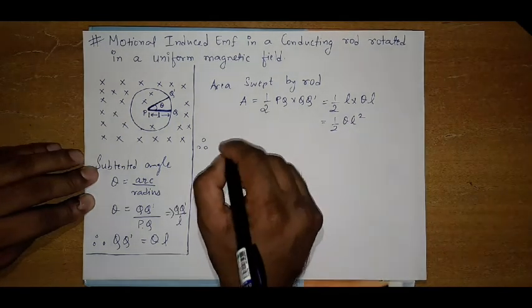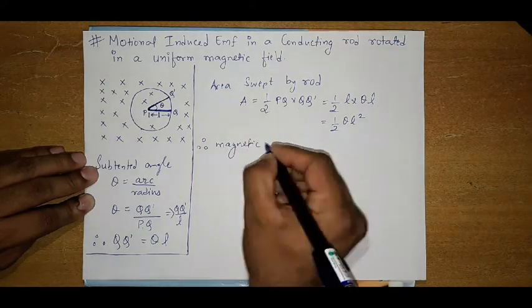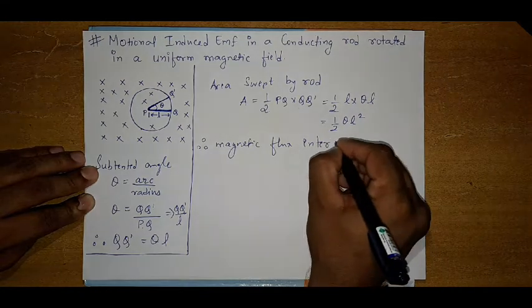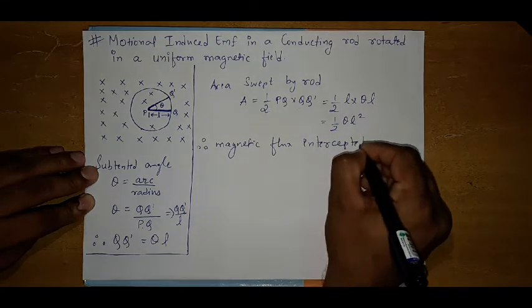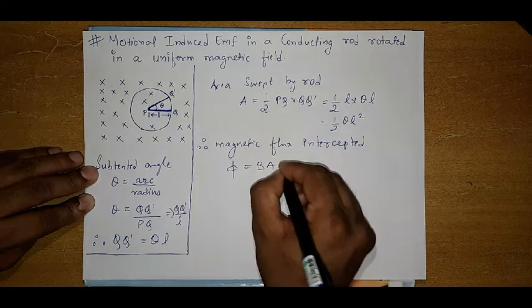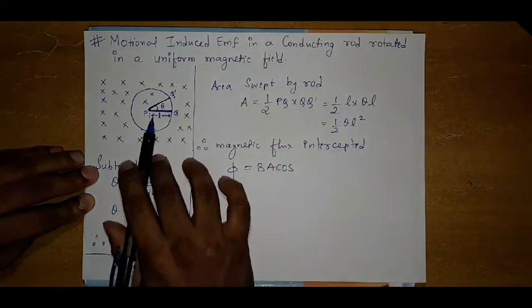Therefore, magnetic flux intercepted: flux phi is equal to B A cos theta. What is theta? Theta is 0 degree.